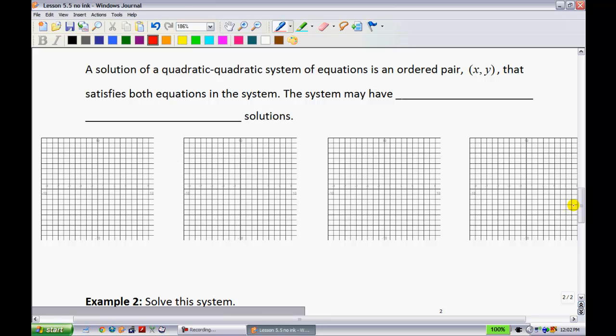Now, what we're going to identify is what happens when you have two quadratics. What are the different scenarios? A solution of a quadratic system of equations is an ordered pair (x, y) that satisfies both equations in the system. The system may have 0, 1, 2, or infinite solutions. Let's take a look at these possibilities.